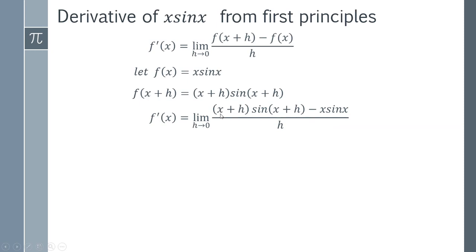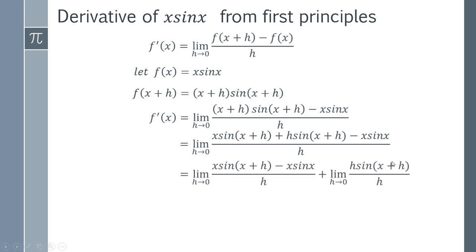The first step is to multiply this out so we'll do x times this expression plus h times this expression, and when we do that we're going to end up with this expression here. You may notice that you've got an h here and you've got an h here, so there is an opportunity to do a cancellation. If I split this up into two different limits and deliberately put this together, this h and this h are going to cancel out so they're going to be gone.